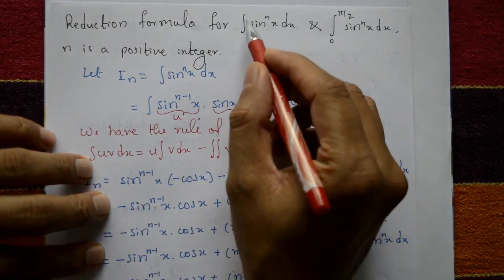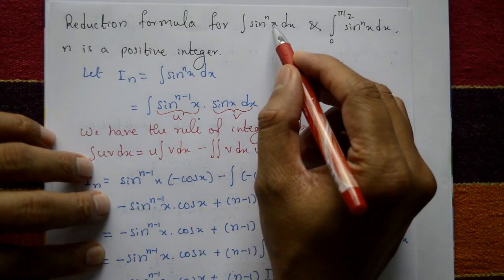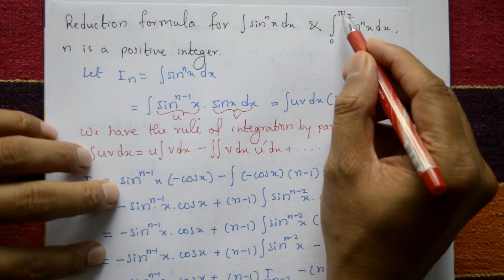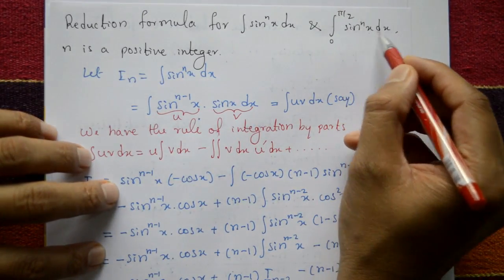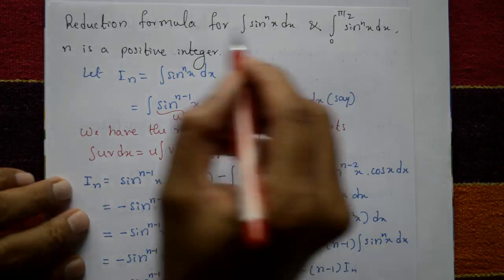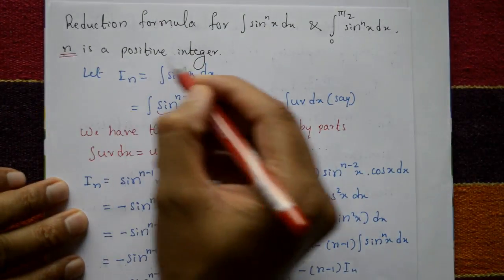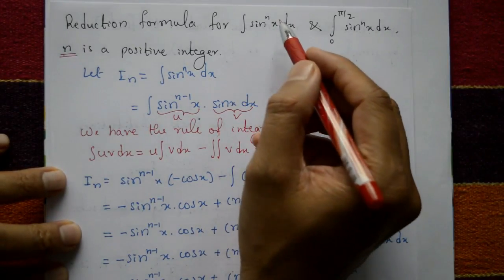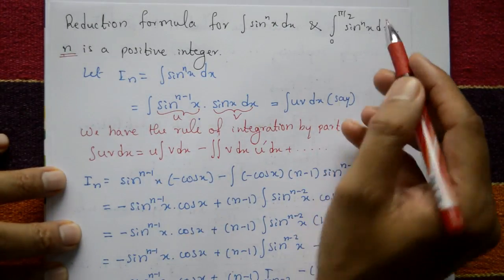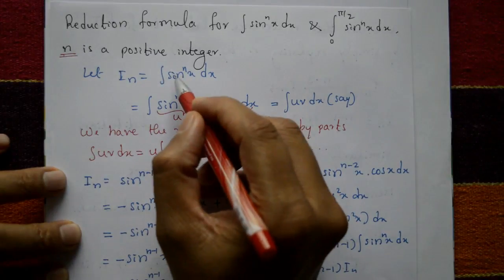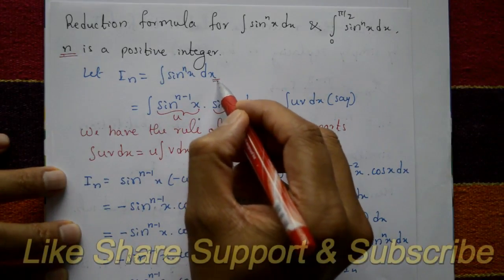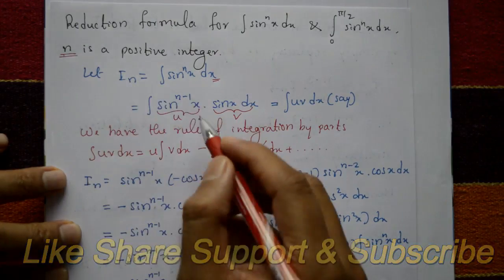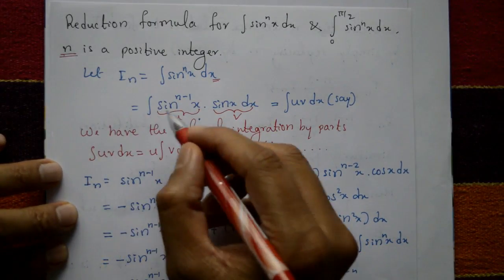We derive the reduction formula for the integration of sinⁿx with respect to x, and the definite integral from 0 to π/2 of sinⁿx with respect to x, where n is a positive integer. We first prove the indefinite integral. Let Iₙ denote the integration of sinⁿx with respect to x.